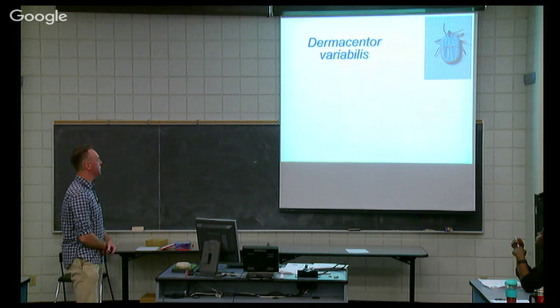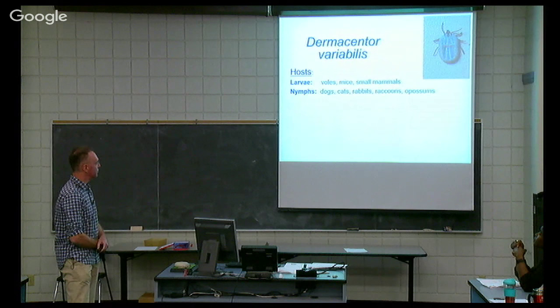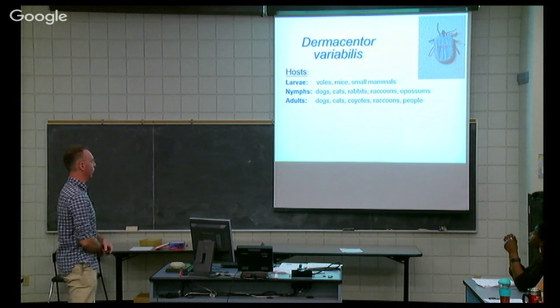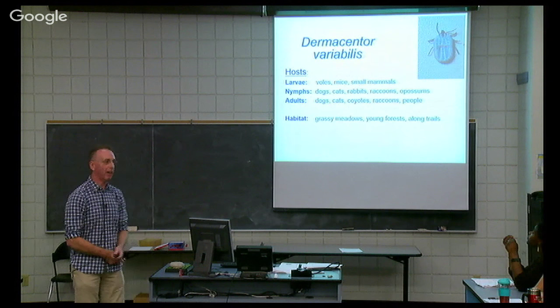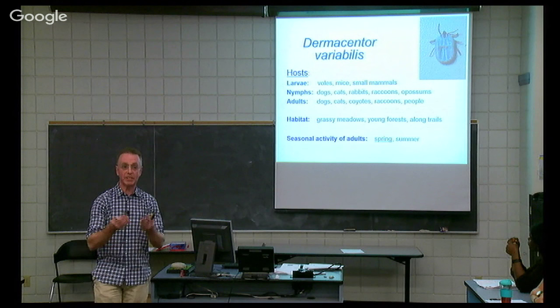The larvae hatch and typically feed on voles, mice, and other wild rodents. The nymphs we occasionally see on dogs, cats, people, and wildlife species. The adults are the life cycle stage we most commonly see on people and our pets. Where do you find them? Not everywhere, but many areas where we go hiking — along trails, open grassy meadows, and immature forests. We usually see this tick late spring and early summer.